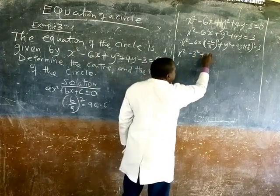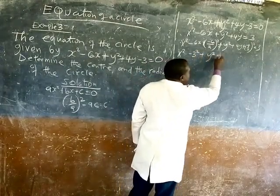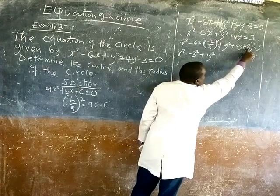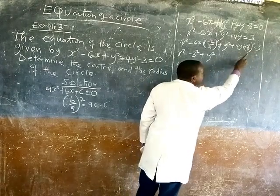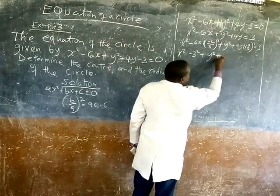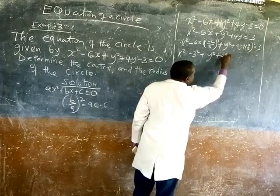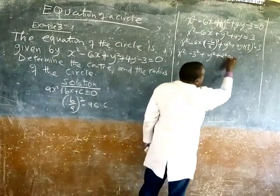x square, square, plus y square. This will be plus, that is 2 square. Plus 2 square is equal to 3.